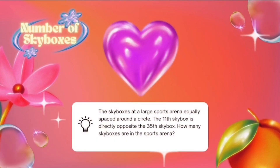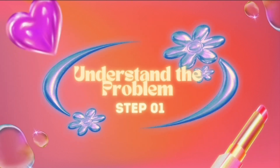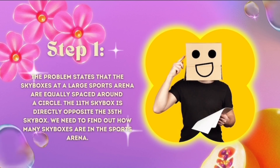For our last problem, it's called 'The Number of Sky Boxes.' The sky boxes at a large sports arena are equally spaced around a circle. The 11th sky box is directly opposite the 35th sky box. The question is: how many sky boxes are in the sports arena? Let's understand the problem: the sky boxes are equally spaced around a circle, and we need to find the total number.